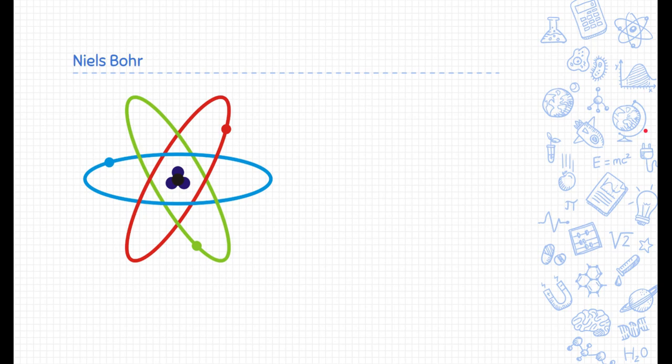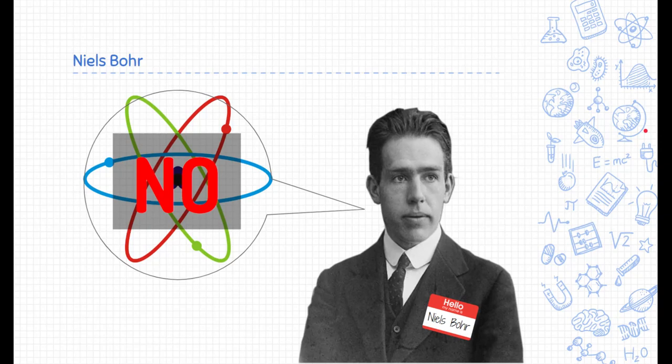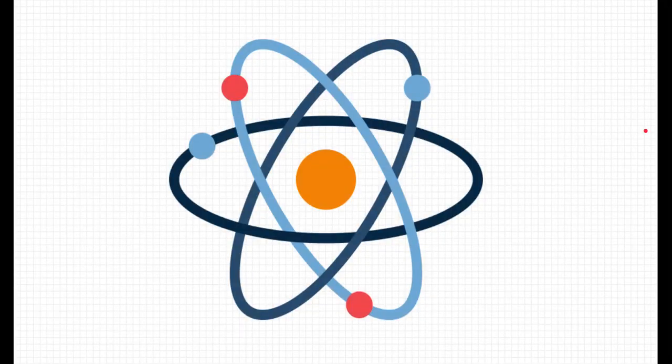First, let's talk about Niels Bohr. When Niels Bohr saw this model of an atom, he wasn't too happy about it. He said, this isn't really how it works. I mean, think about it. If you think about the atom, the center is positively charged.